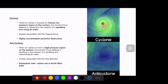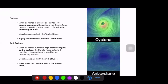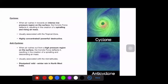Related to the Coriolis force are the concepts of cyclone and anti-cyclone. A cyclone is an area of intense low pressure. Whenever air rushes in towards an intense low pressure region on the surface, the Coriolis force deflects it, resulting in the creation of a spiraling and rising mass of air. These are common occurrences in the tropical zone due to intense low pressures from high temperature and insolation. They are highly concentrated, powerful, and destructive systems.